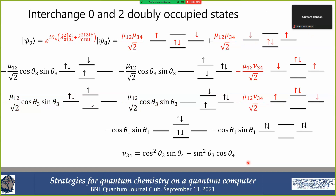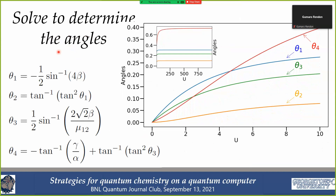The angles are given by a formula in terms of the initial coefficients α, β, and γ. Looking at these angles as a function of U: the theta_2 (quad term) coefficient is nearly zero for small U but grows for strongly correlated systems. Notably, even in the large-U limit, one angle approaches π/4 and all others are less than π/8. This is a generic feature of UCC — many of the angles don't get very large even when correlations become very strong.